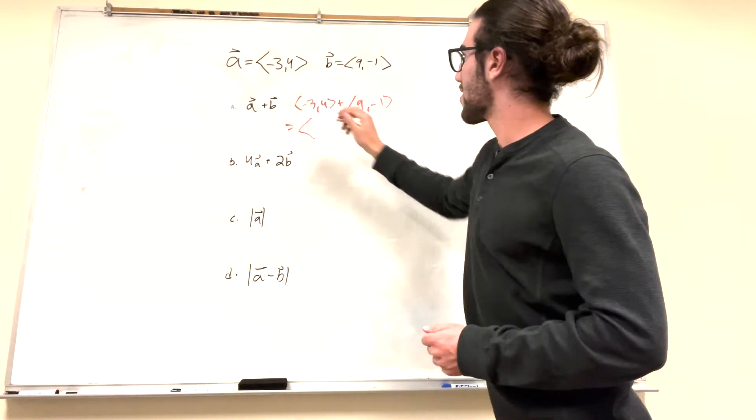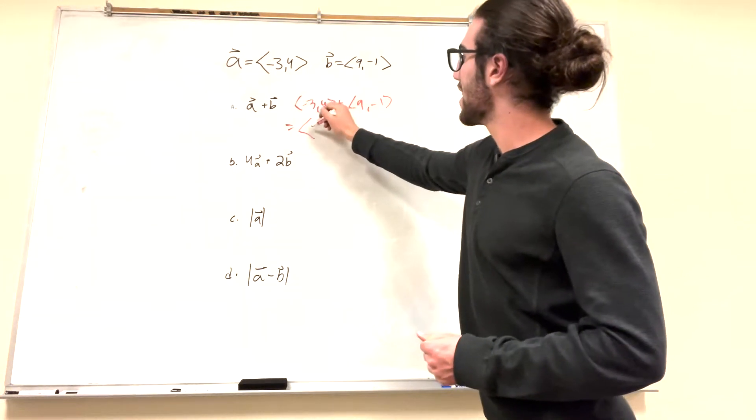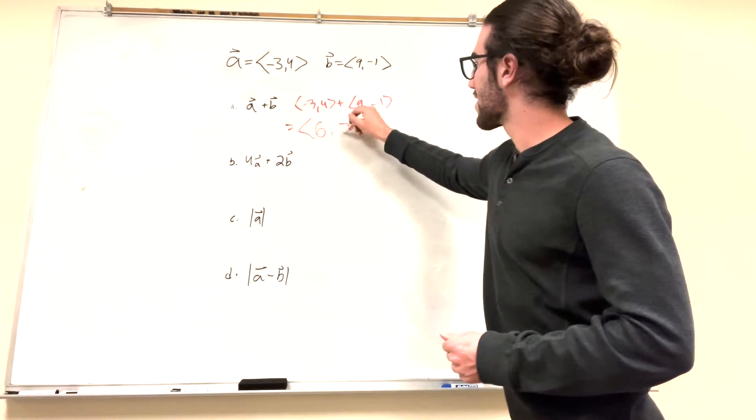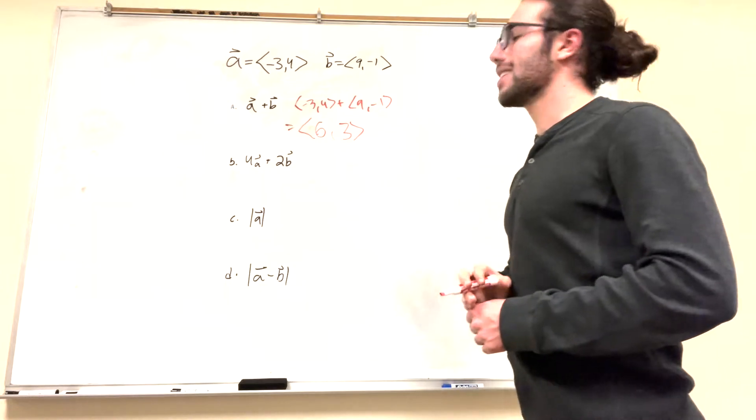So 3, negative 3, or excuse me, negative 3 plus 9 is equal to 6. 4 plus negative 1 is equal to 3. This is a plus b. Pretty simple, right?